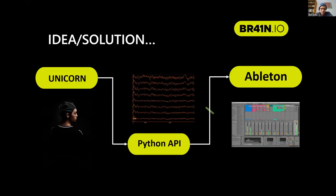Our solution was pretty simple: we use the Unicorn to acquire data, then use the Python API to process the data, and then convert the data and send it to Ableton, which is a digital audio workstation. This would adjust the tempo and speed of your backing track, so you would be able to play a melody and adjust the speed of your backing track, for example.